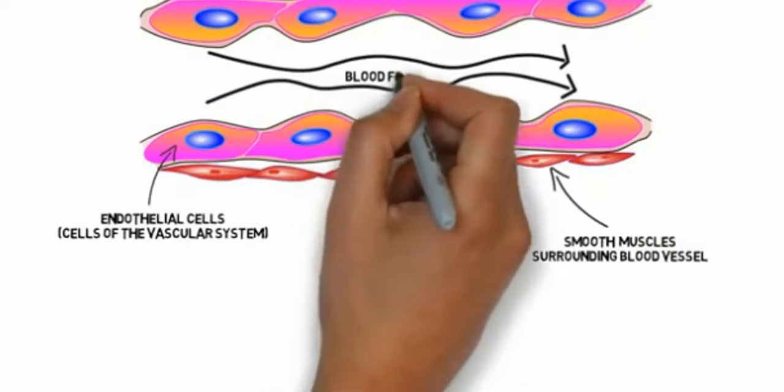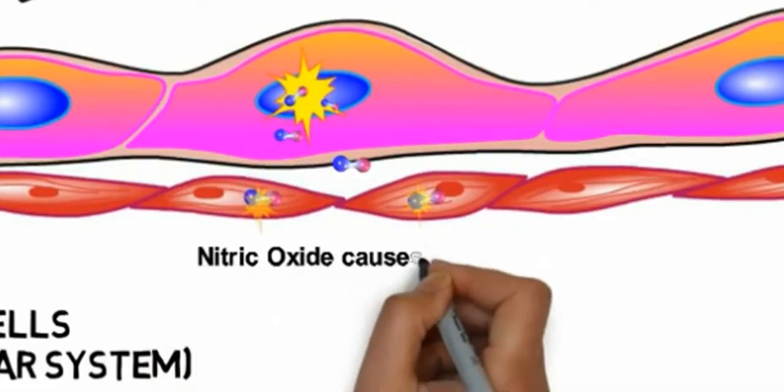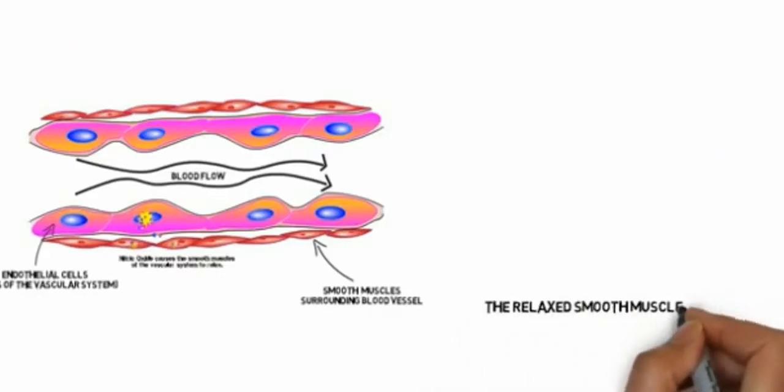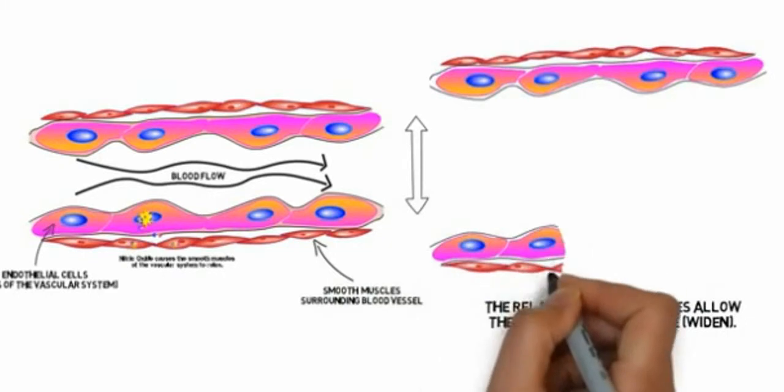Here's how. Nitric oxide is a gas that, when produced, caused the smooth muscles of the vascular system to relax. The relaxation of the smooth muscles enables the blood vessels to dilate, or widen in diameter, an effect known as vasodilation.